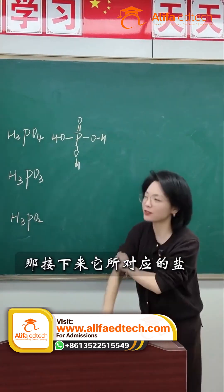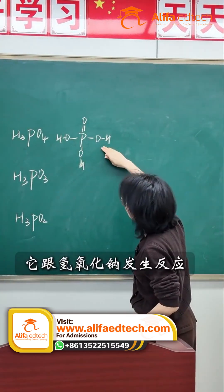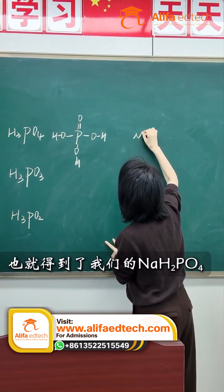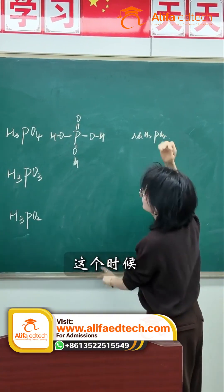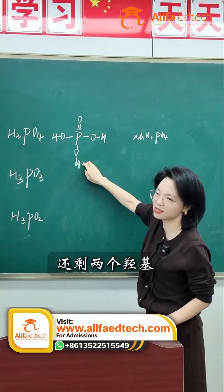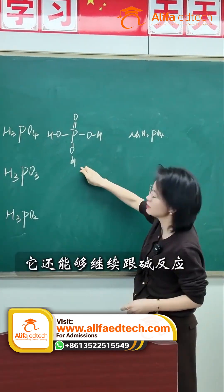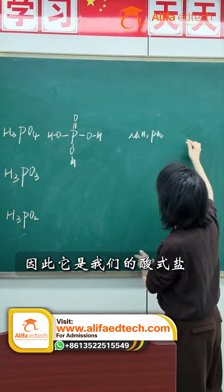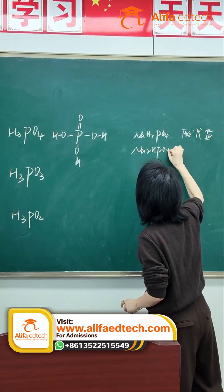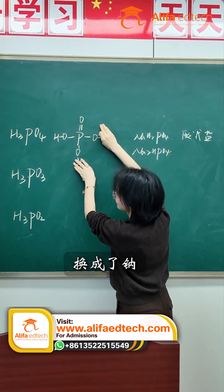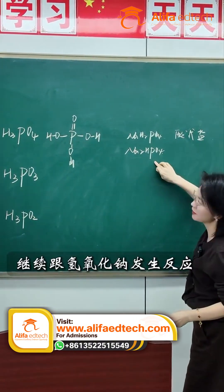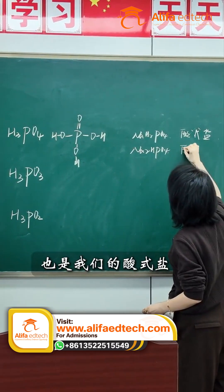Now let's look at its corresponding salts. If it reacts with sodium hydroxide consuming one mole of it, and we replace one of these hydrogens with a sodium atom, we get NaH₂PO₄. The sodium has replaced one hydrogen, but there are still two hydroxyl groups left, so it can continue to react with a base — therefore, this is an acid salt. If we remove another hydrogen, replacing two of the hydrogens with sodium, there's still one hydroxyl group left, so it can still react with more sodium hydroxide. This is also an acid salt.